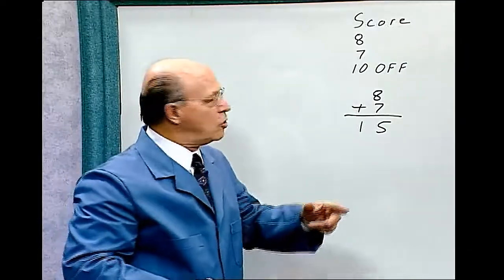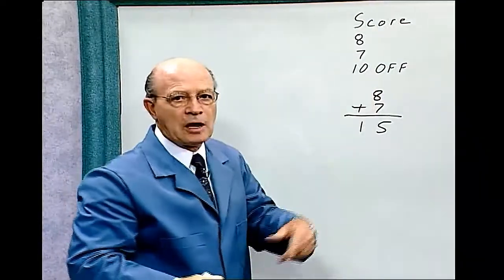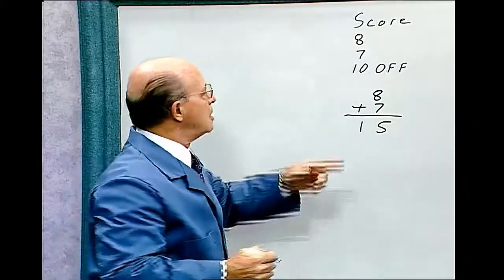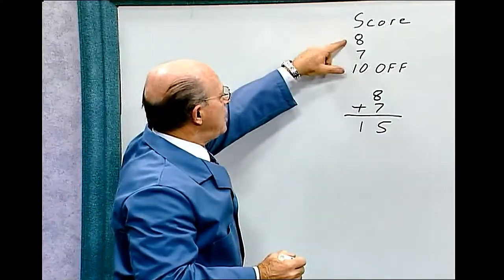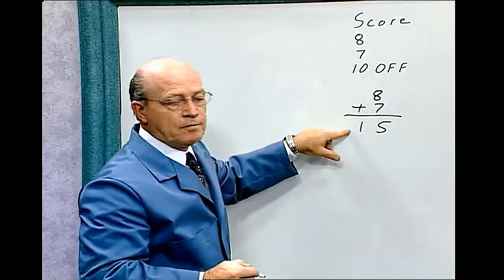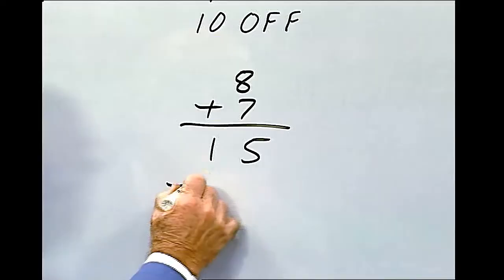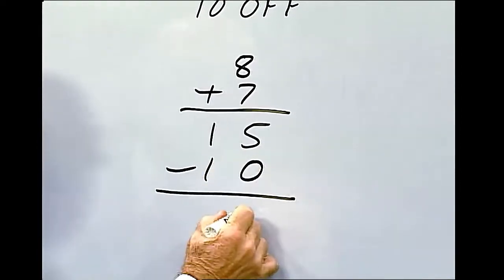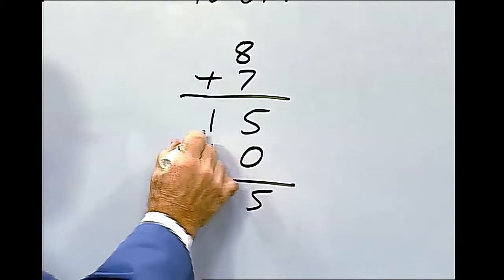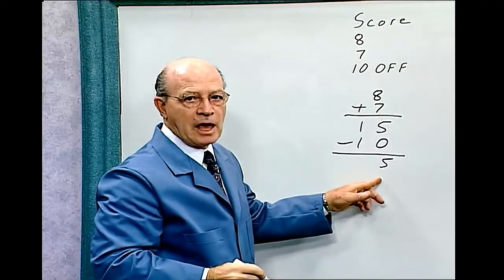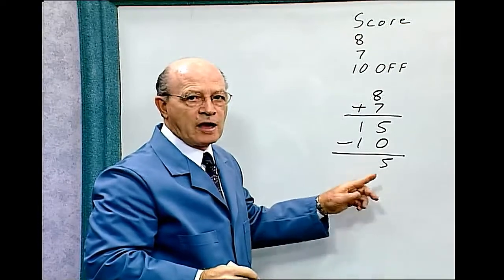But I also scored a ten off. Ten off speaks of subtraction. So I'm going to have to take ten off from these two scores which I've received, which equals fifteen. Minus ten. Zero from five leaves five. One minus one equals zero. So for that game I scored only five points.